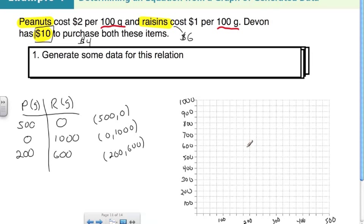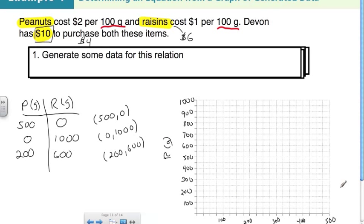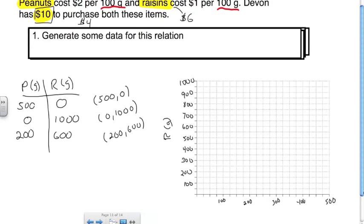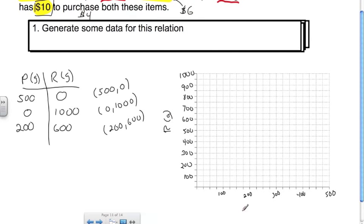Now I can graph the data. First I label the graph and use a scale that uses as much of the graph as possible. I've already put the labels on to save time — raisins on the y-axis and peanuts on the x-axis.